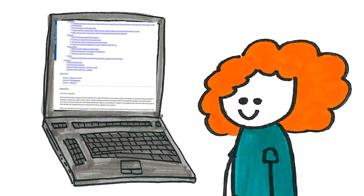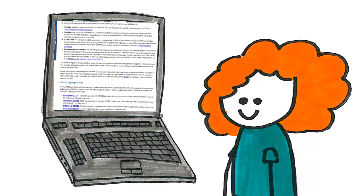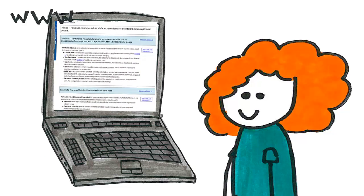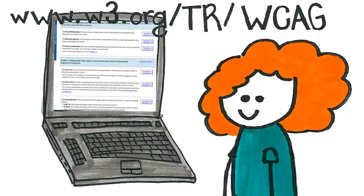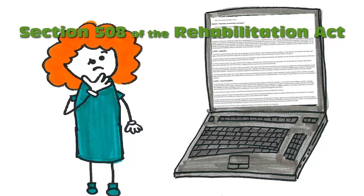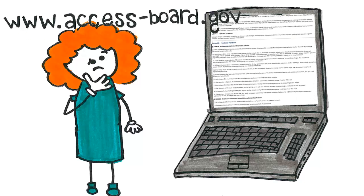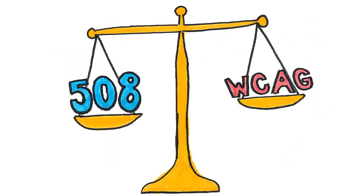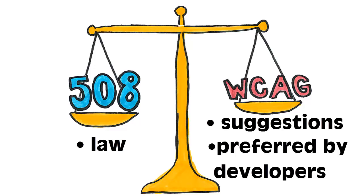For the purposes of this video series, we'll talk about the guidelines put together by the folks at the World Wide Web Consortium, or W3C. These guidelines are called the Web Content Accessibility Guidelines, and we're using version 2.0, available at www.w3.org. Section 508 of the Rehabilitation Act also has some great guidelines set up, which you can find at www.access-board.gov. These two sets of guidelines are sometimes similar, and sometimes one is more demanding than the other. The main difference is that Section 508 is law, while WCAG is essentially a set of suggestions, though many developers do find it better than 508.